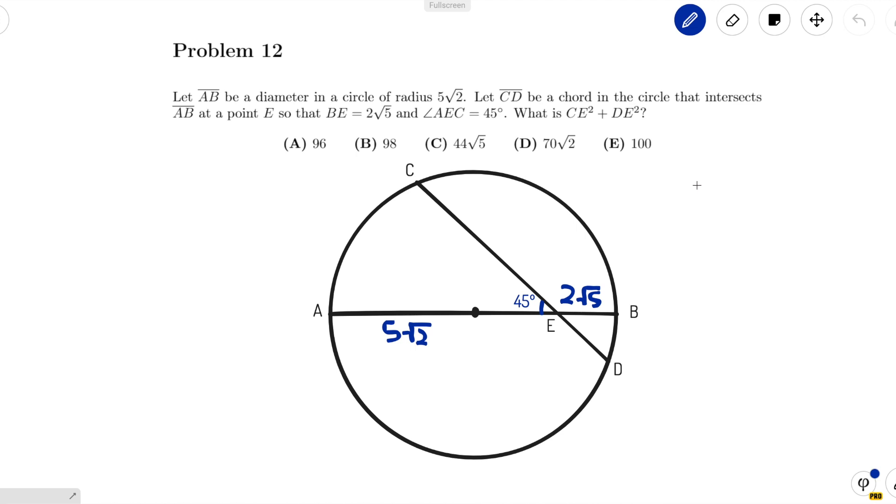I don't know about you guys, but 45 degrees AEC reminds me of 45-45-90 triangles, but I don't see any 45-45-90 triangles here, so I'll try to make my own. A good choice could be to draw the altitude from the center of the circle to CD, and that does two things.